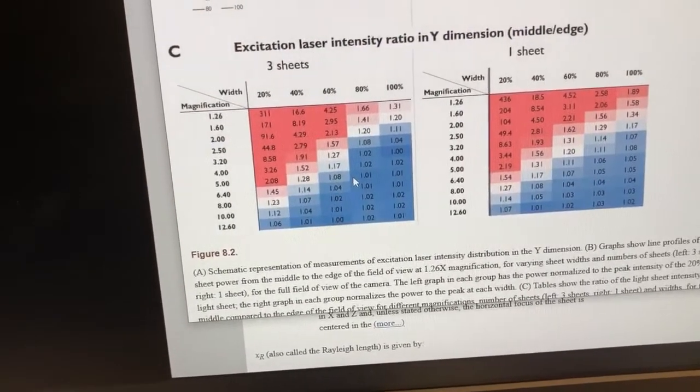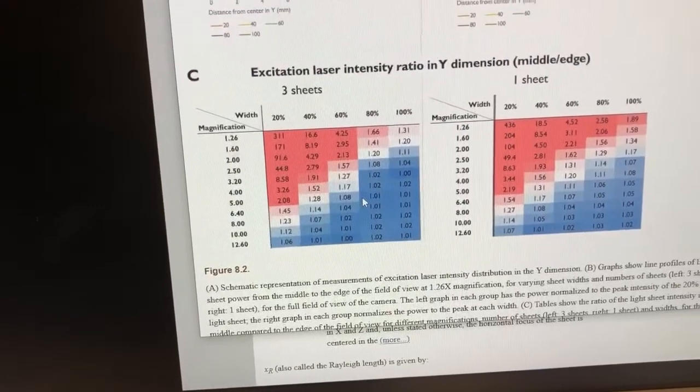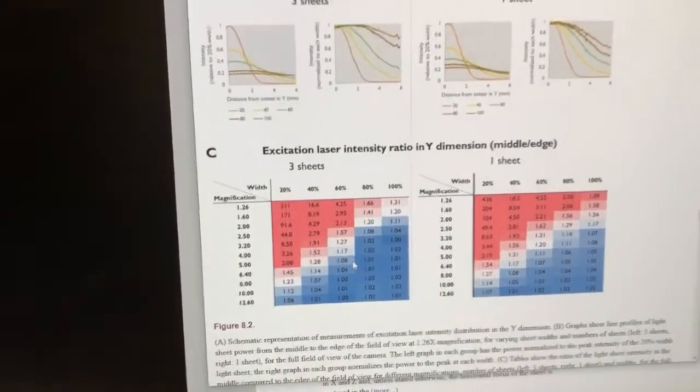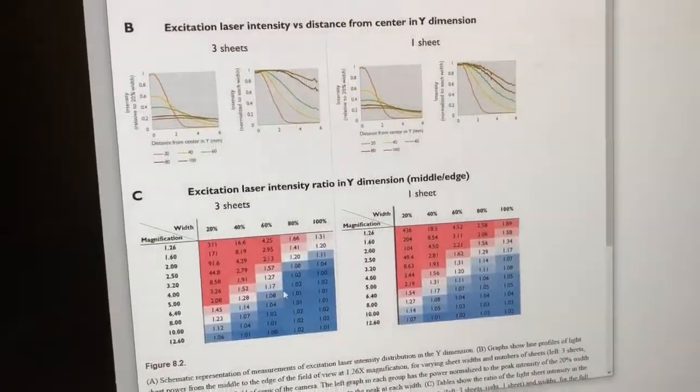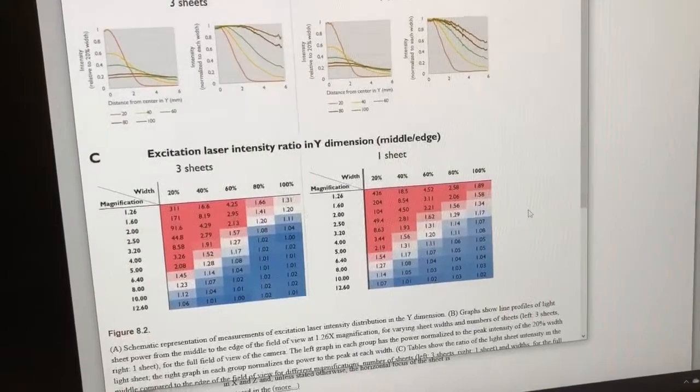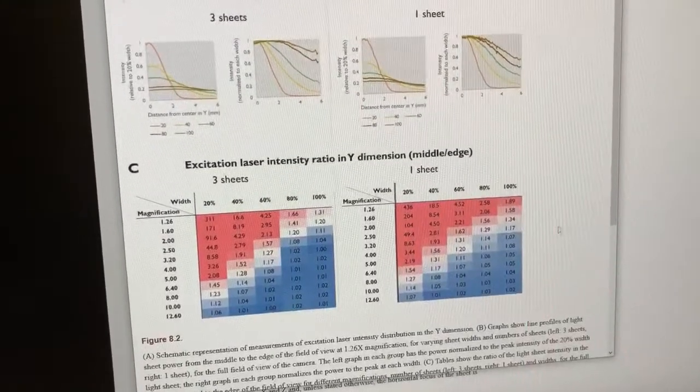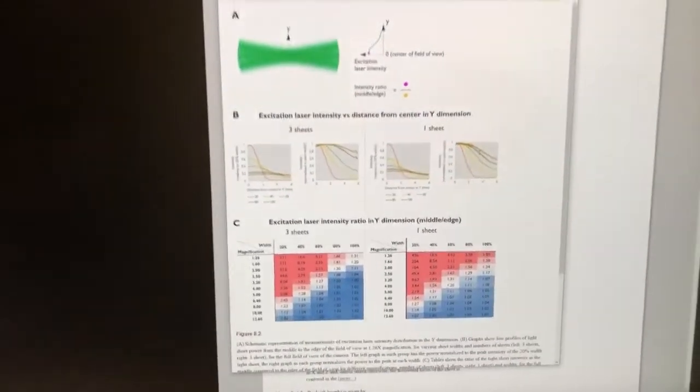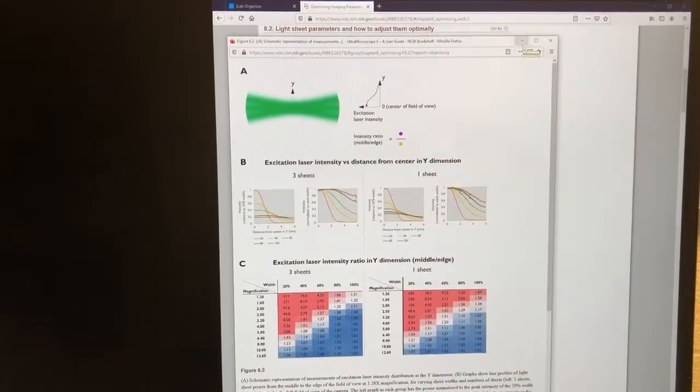So if you find that you're zooming in a lot and your sample is kind of dim, you can look at this to get a sense of how much you can reduce the width to get a little bit more power into your sample. Okay, this sample doesn't have that problem, but I thought I would point that out in case you're in a situation where you might benefit from this.